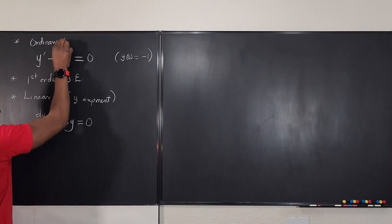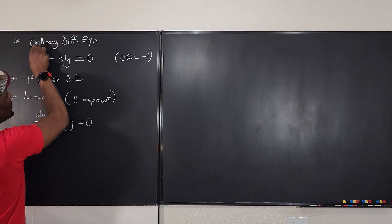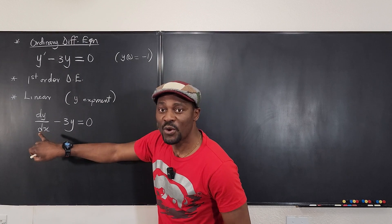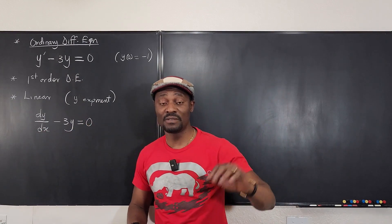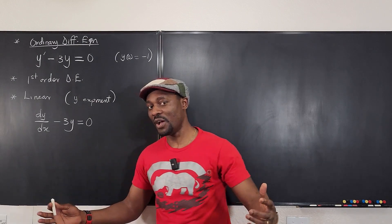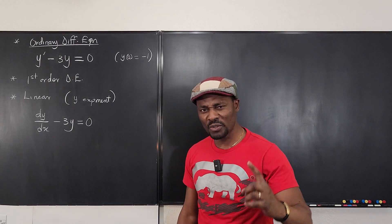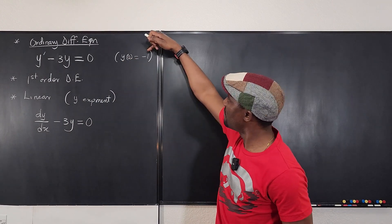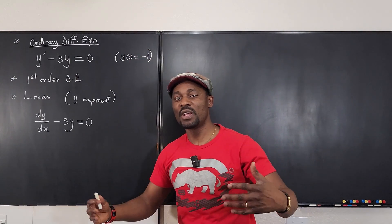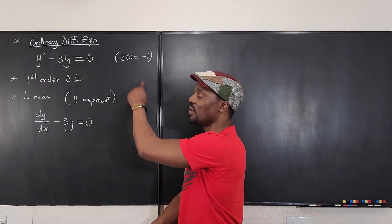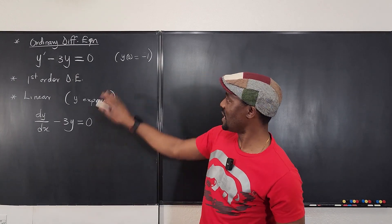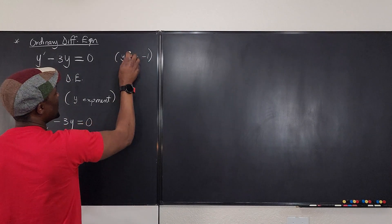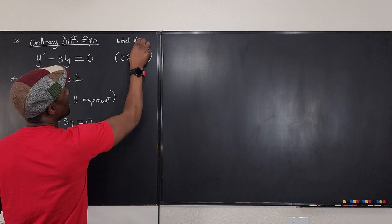It's important to understand why it's called an ordinary differential equation: there is only one independent variable, so you're differentiating with respect to only one variable, not two or three. One more thing — they gave you extra information: Y evaluated at X equals 0 gives negative 1. This is what you call an initial value problem, because they gave you the initial values of X and Y.